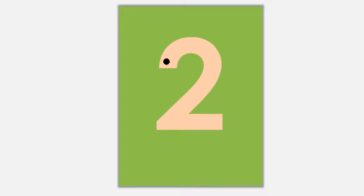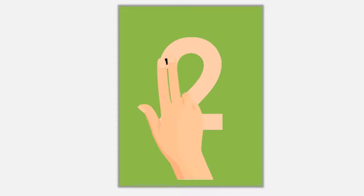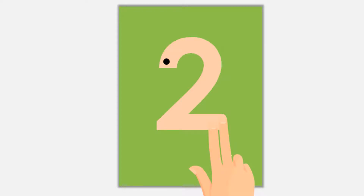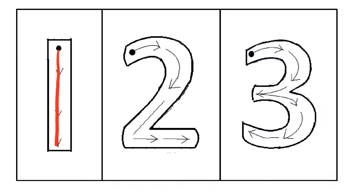This is number two. Let me show you how to trace number two. We are going to start from this black dot there. Now I'm going to show you how to trace number two on your worksheet. Let's start from the dot again. Watch.